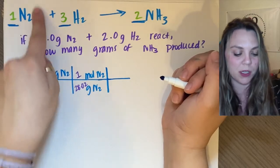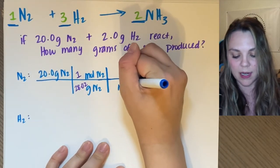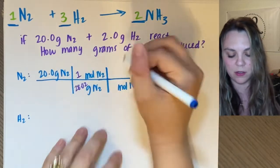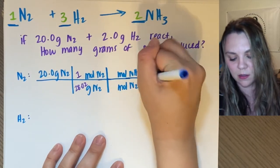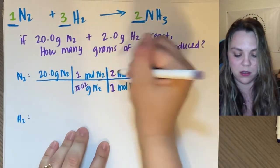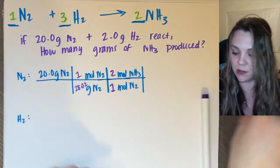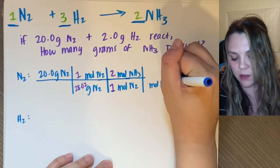Now I use my mole ratio. So I'm going to go from nitrogen into ammonia. So get out of moles of N2, get into moles of NH3. And this is a 1 to 2. You just use your balance coefficients.